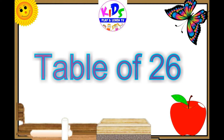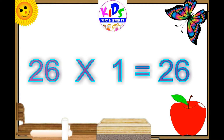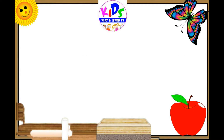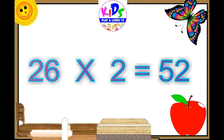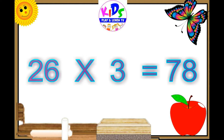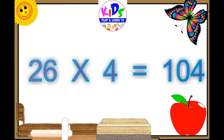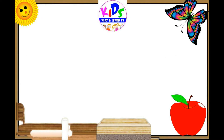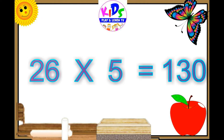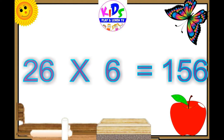26 ones are 26, 26 twos are 52, 26 threes are 78, 26 fours are 104, 26 fives are 130, 26 6s are 156.